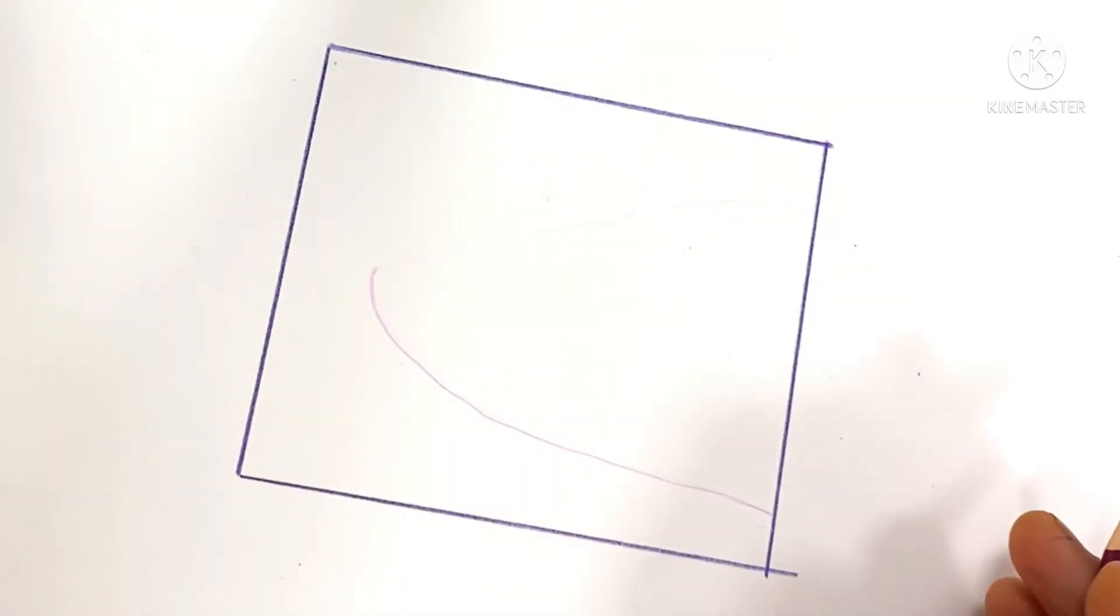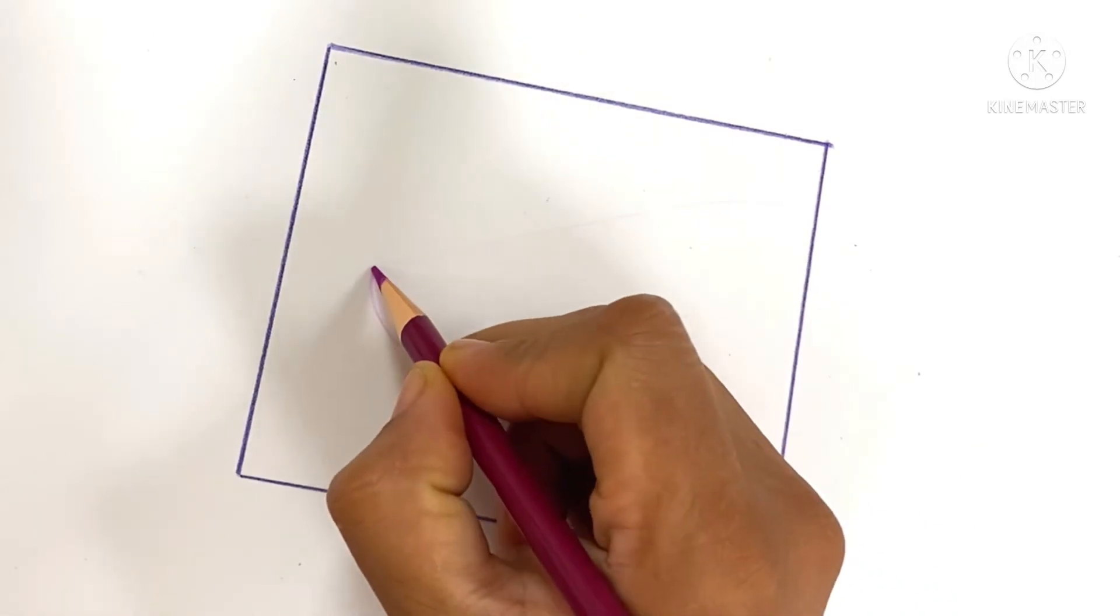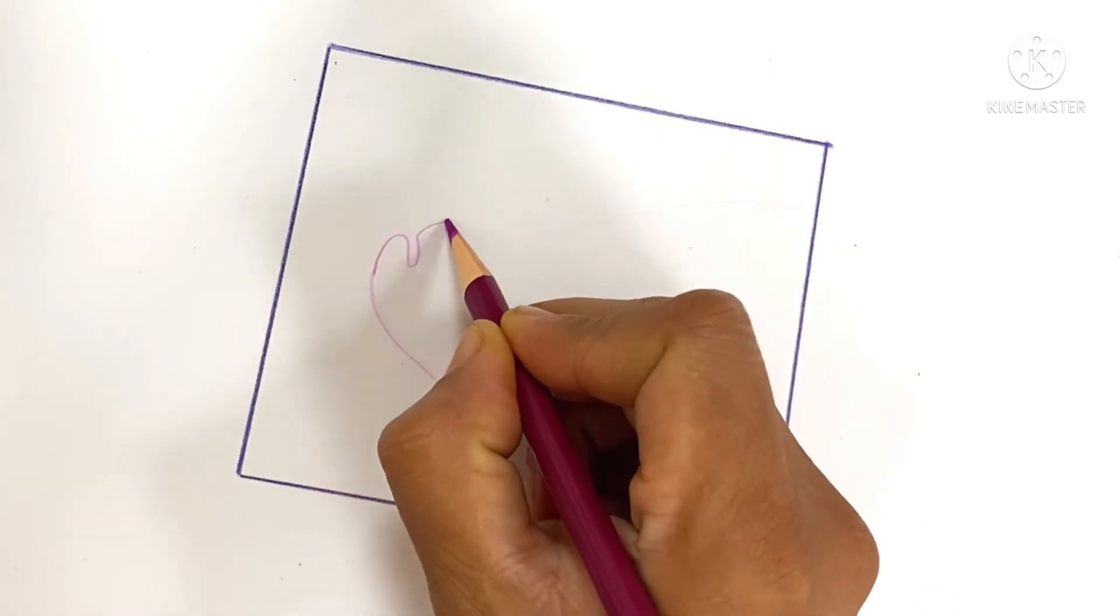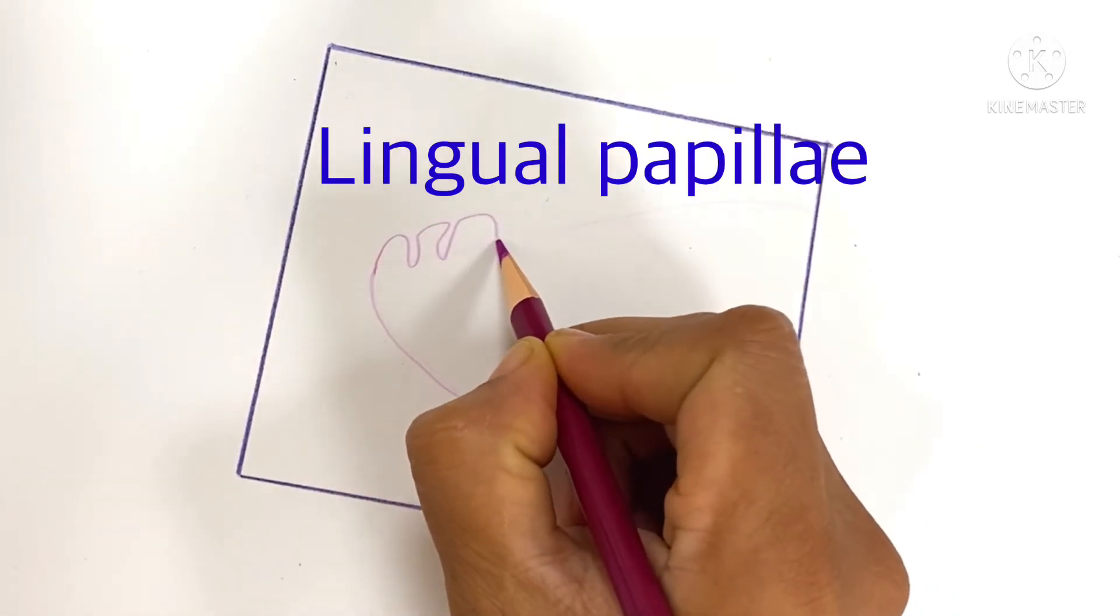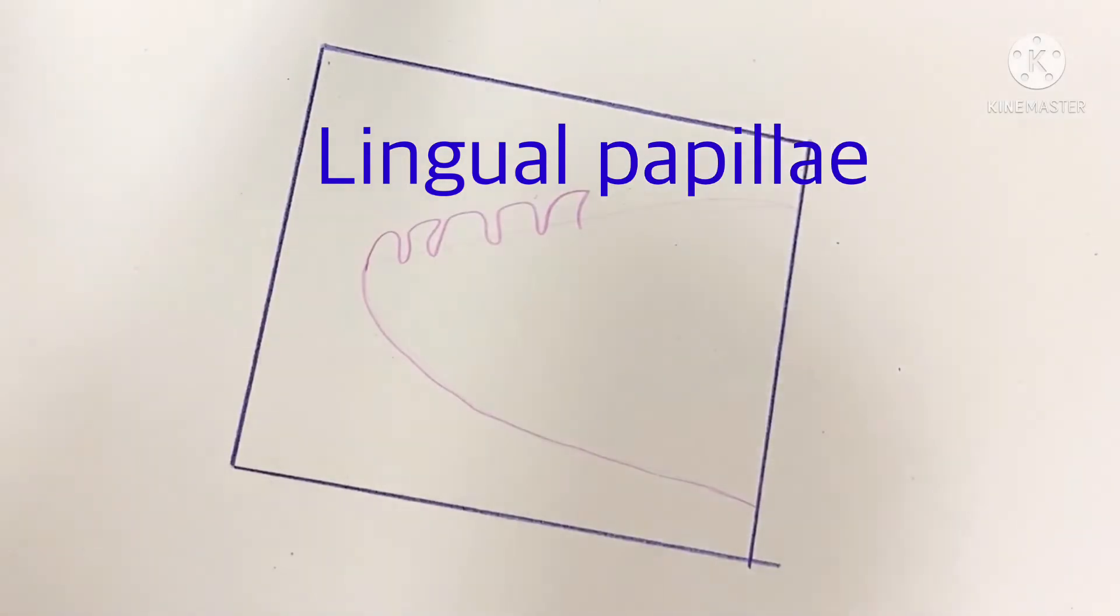Histology of tongue. The tongue is conical in shape. It has a ventral surface and dorsal surface.